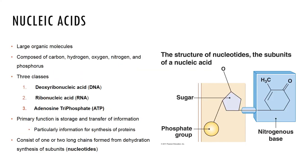Nucleic acids are the final category of organic compounds and include DNA, RNA, and ATP. DNA and RNA are the largest molecules in the body and contain carbon, oxygen, hydrogen, nitrogen, and phosphorus. The building blocks are nucleotides, each composed of a nitrogenous base, a pentose sugar, and a phosphate group. DNA makes up our genes and is found mostly in the nucleus; RNA is an intermediate form used when decoding DNA into a protein.